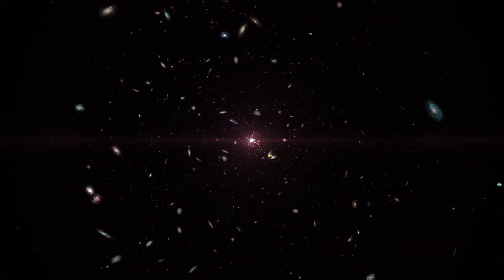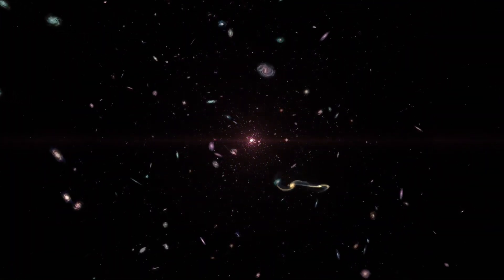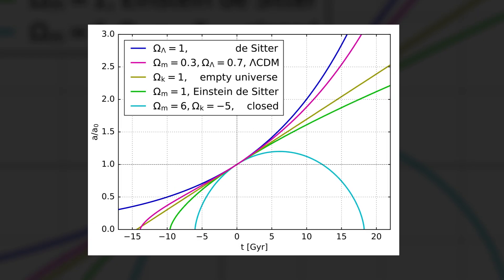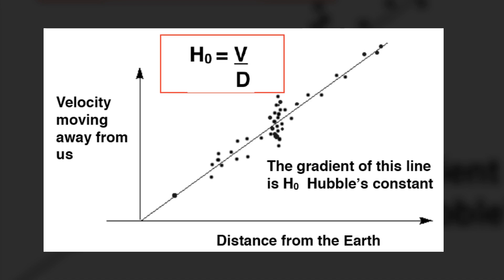You may have heard about the crisis in cosmology. Well, basically, the crisis originated when different methods of measuring the age of the universe started giving different results, and still do.